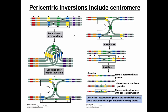How do you remember para and peri and keep them separate? The way I separate it is I think of 'peri' as sort of like a pear — like the fruit. I think of the centromere as looking like a little piece of fruit. So pericentric inversions involve the 'pear,' meaning they involve the centromere. That's how I remember it.